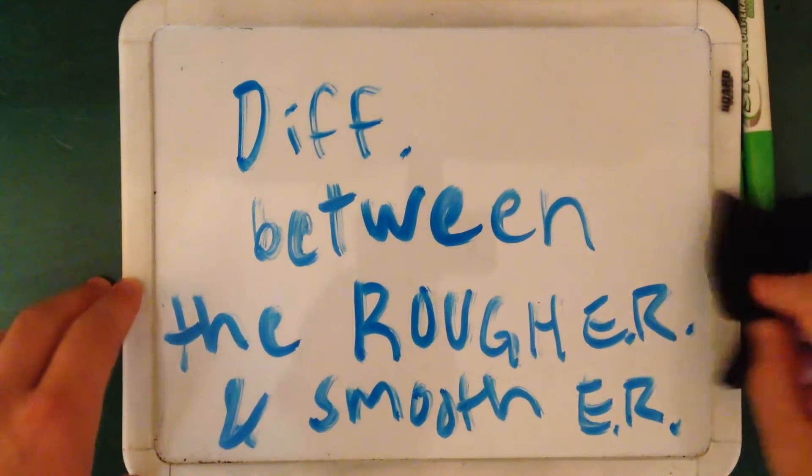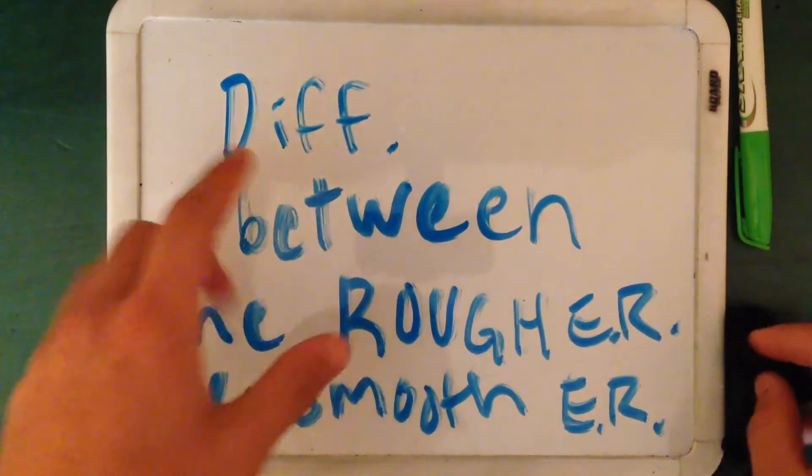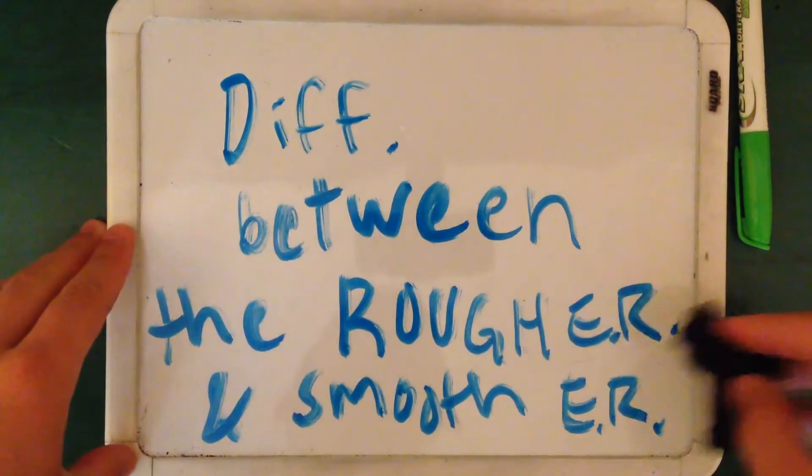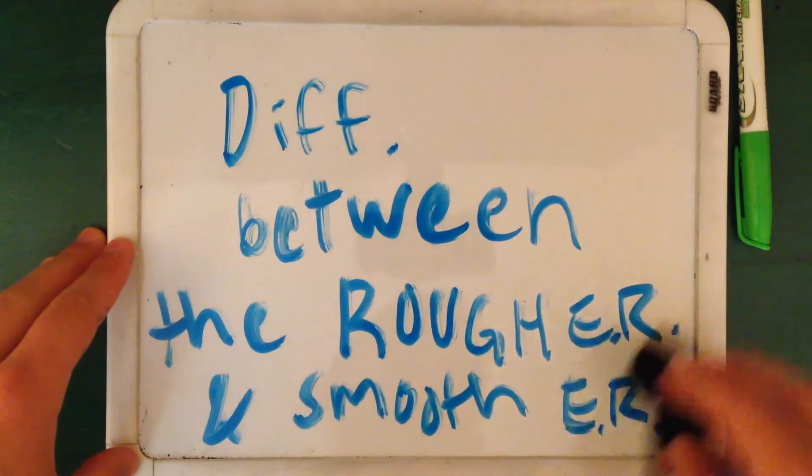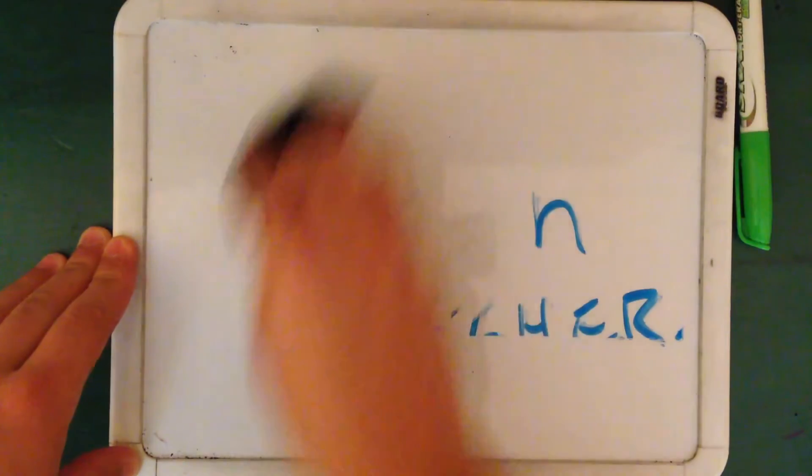Alright, so in this video I'm talking to you about these two very unique organelles inside of the cell. I'm going to talk to you about the difference between the rough endoplasmic reticulum and the smooth endoplasmic reticulum.